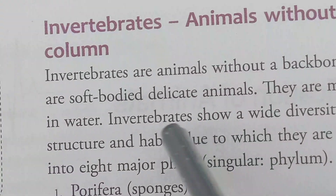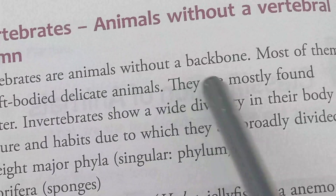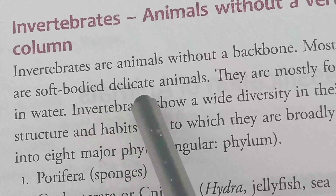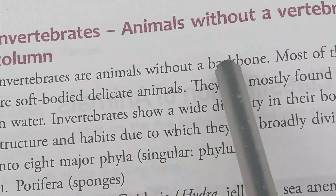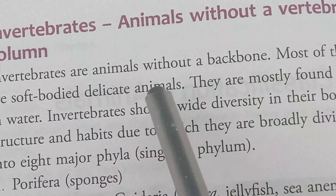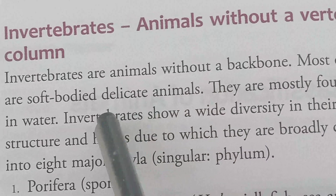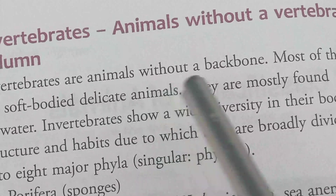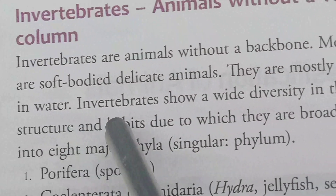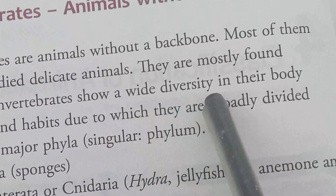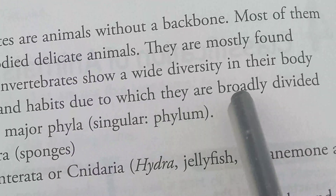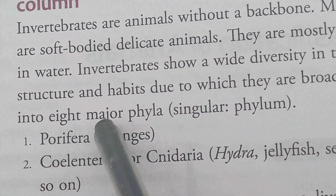Invertebrates are animals without a vertebral column — animals without a backbone. Most of them are soft-bodied, delicate animals. As they have no backbone, their body lacks an internal skeleton. They are mostly found in water. Invertebrates show a wide diversity in their body structure and habits, due to which they are broadly divided into eight major phyla.